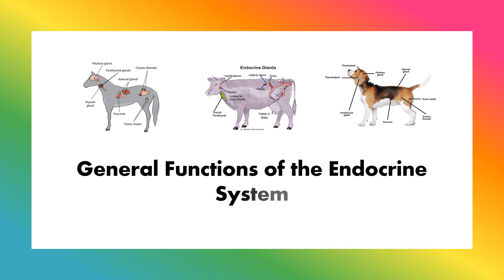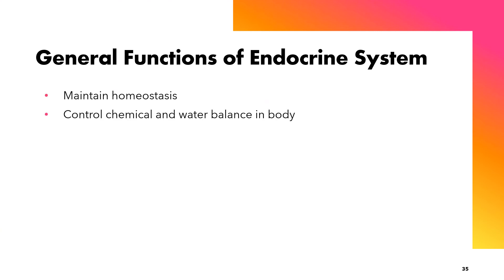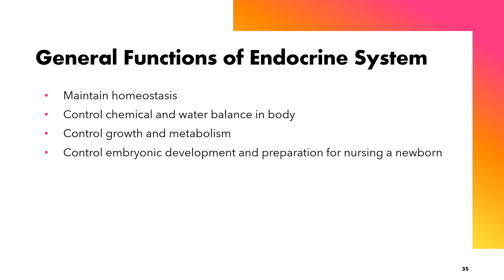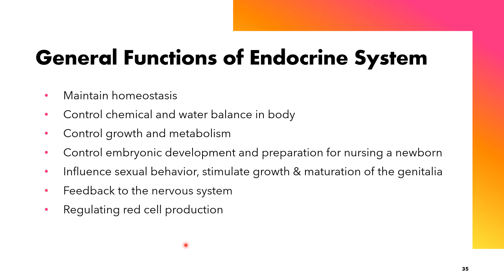The general functions of the endocrine system include: maintenance of homeostasis, control of chemicals and water balance in the body, control of growth and metabolism, control of embryonic development and preparation for nursing a newborn, influencing sexual behavior, stimulating growth and maturation of the genitalia, feedback to the nervous system, regulating red cell population, and inducing adaptive changes to stress.